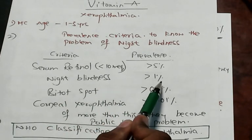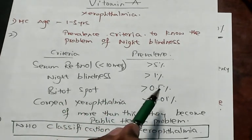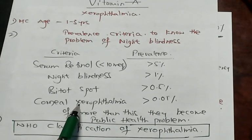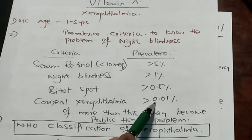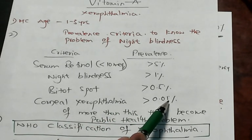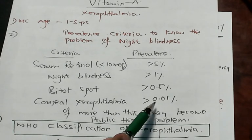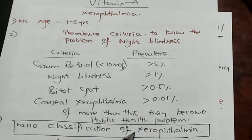If serum retinol less than 10 milliequivalents prevalence is more than 5%, that is a public problem. Night blindness more than 1%, Bitot spots more than 0.5%, corneal xerophthalmia more than 0.01%. Once it is more than these values, then that becomes a public health problem.